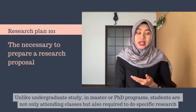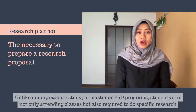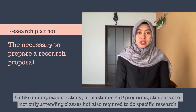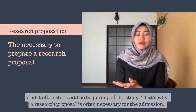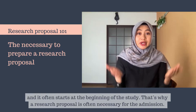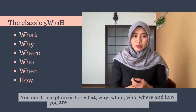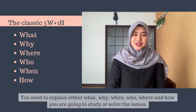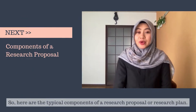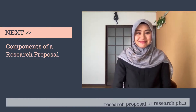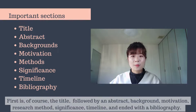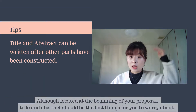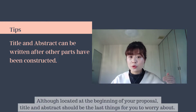Unlike undergraduate study, in master's or PhD programs, students are not only attending classes but also required to do specific research, and it often starts at the beginning of the study. That's why having a research plan will be a great benefit. You need to explain what you are going to study, why, where, when, who, and how you're going to do it. Here are the typical components of a research proposal: first is the title, followed by an abstract, background, motivation, research method, significance, timeline, and ended with a bibliography. Although located at the beginning, the title and abstract should be the last things for you to worry about.